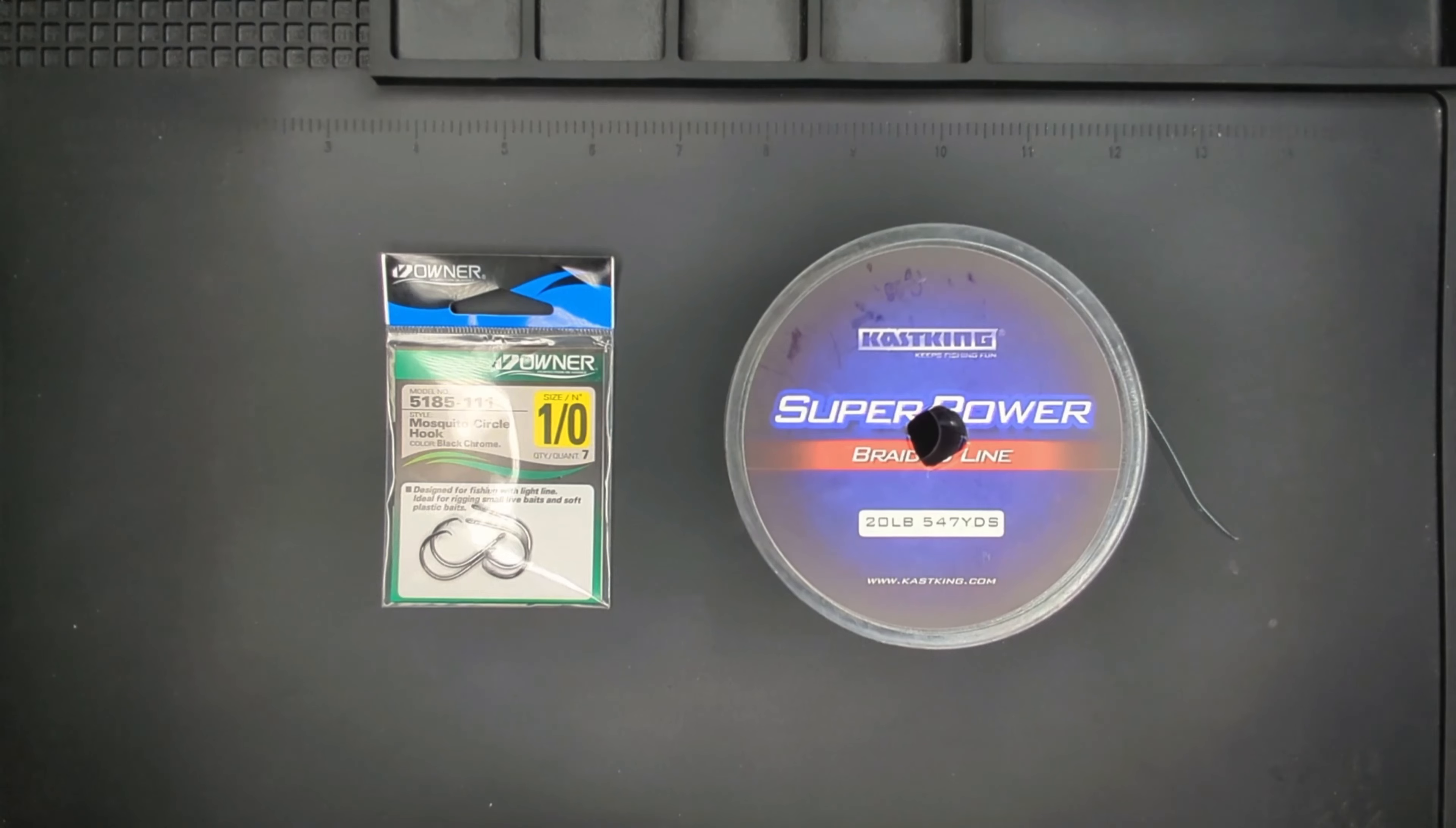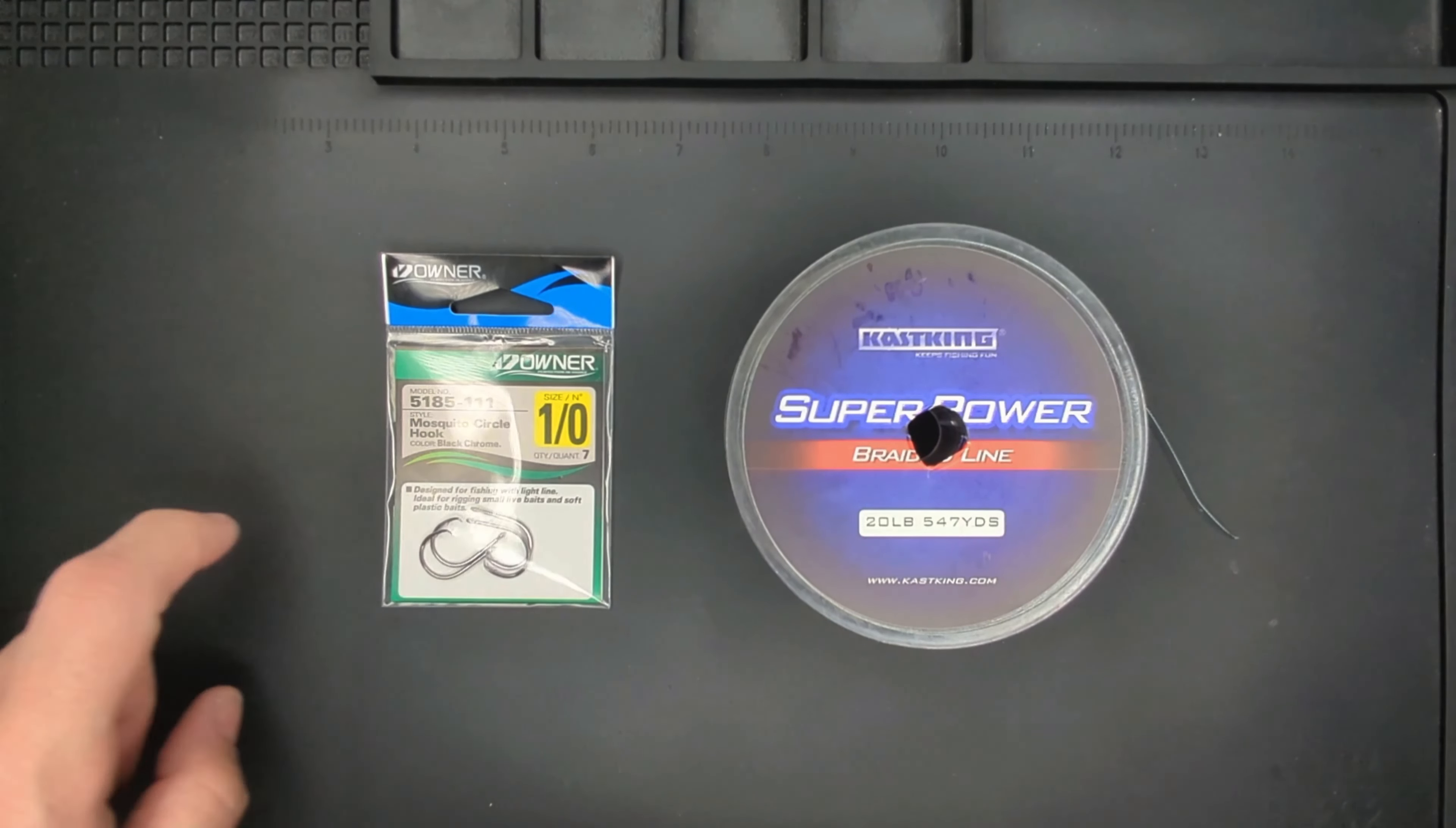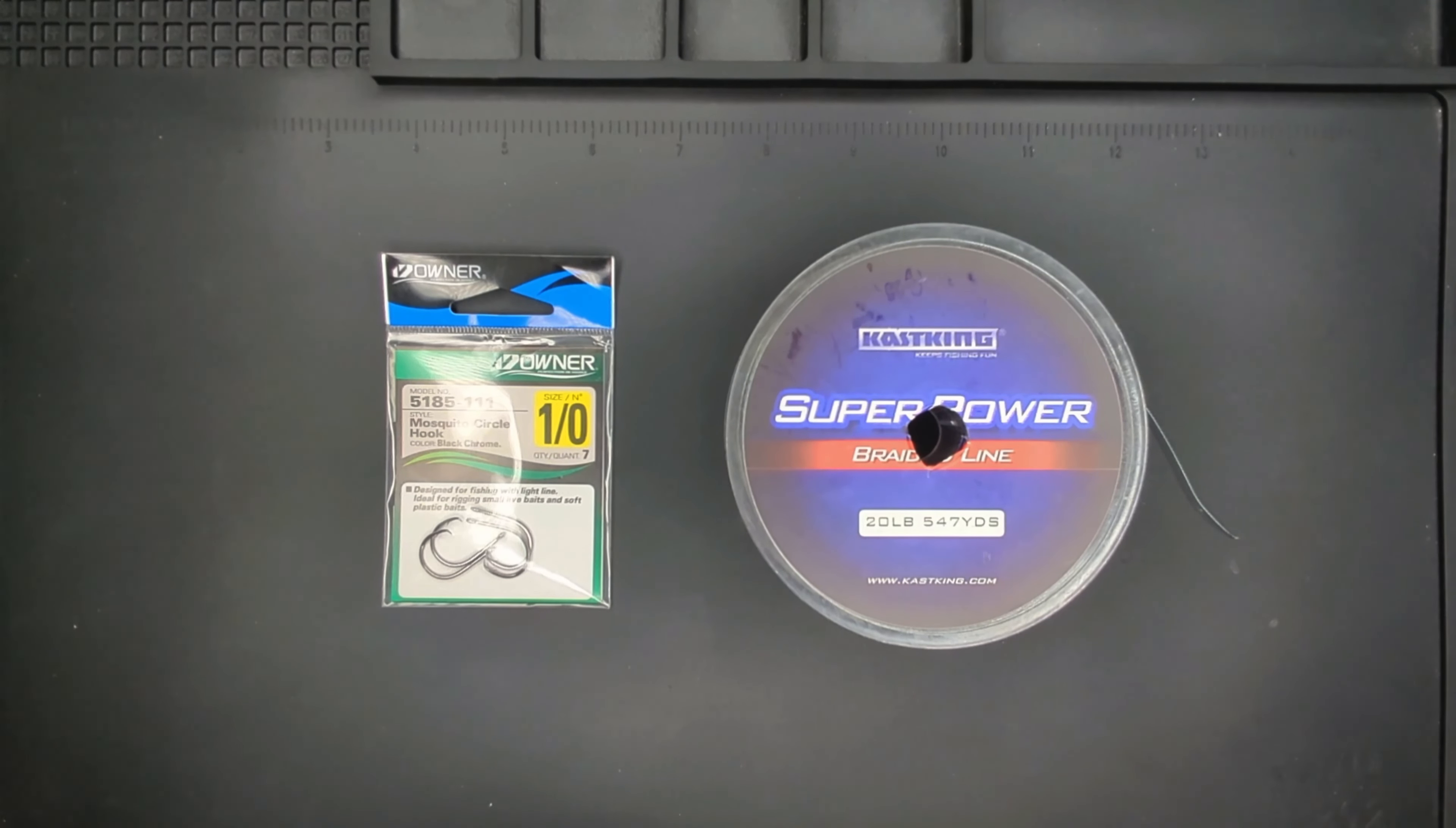I'm going to teach you how to tie a hair rig for fishing for carp. All you need is some braid and a circle hook between size 4 all the way up to 1 aught.